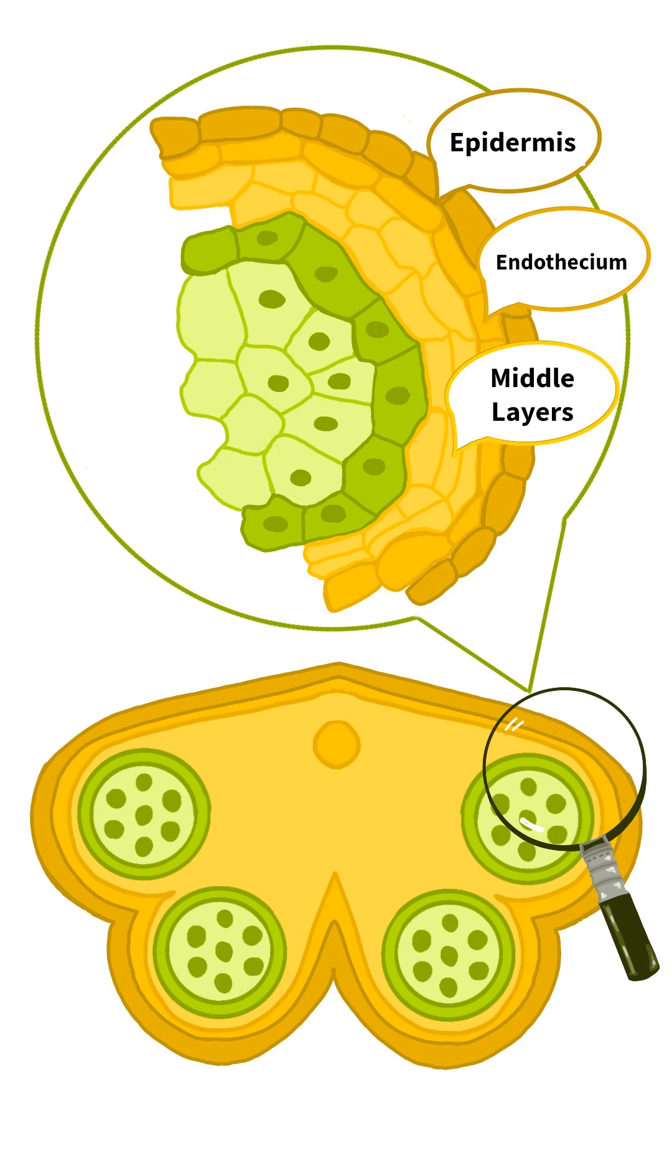The innermost layer, or the tapetum, plays a vital role in nourishing and developing the pollen grains. Tapetum cells are nutritive and produce specialized structures called Ubisch bodies.